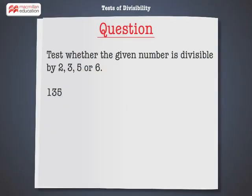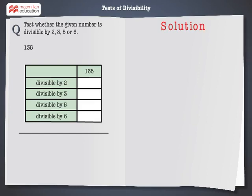Test whether the given number is divisible by 2, 3, 5, or 6. The number is 135. Let's start with the first check: whether the number 135 is divisible by 2 or not.